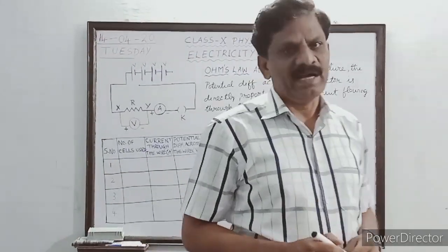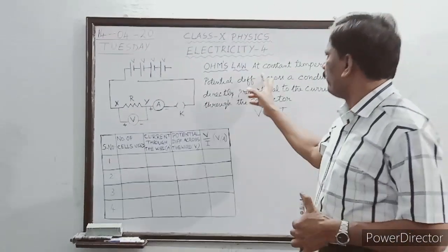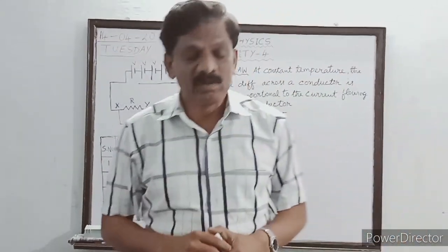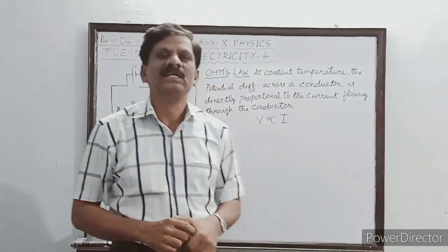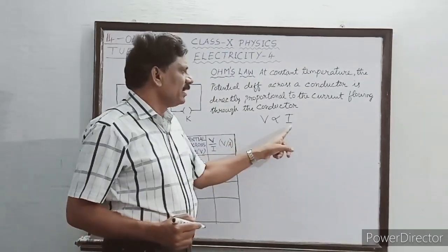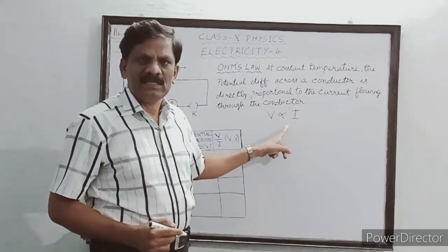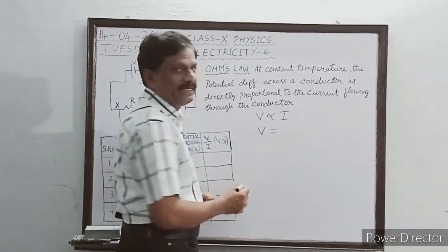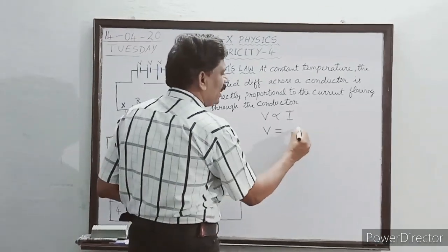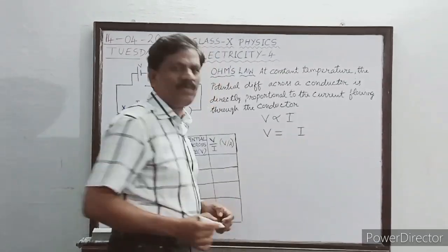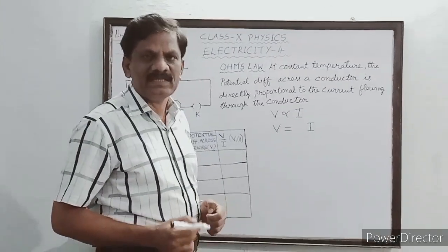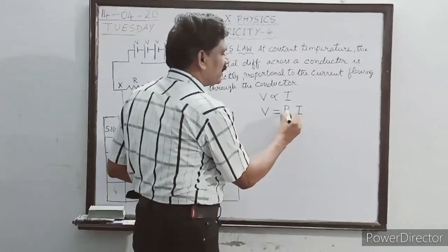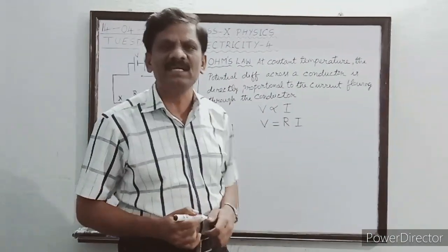Why have we mentioned 'at constant temperature'? We will understand that later. V is proportional to I, or V is equal to a constant multiplied by I. That constant of proportionality is called the electrical resistance of the conductor.